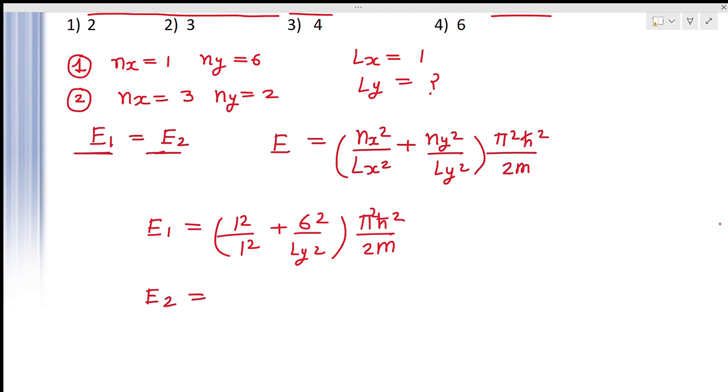And E2 will be NX value is 3. 3 square upon LX square means 1 square, plus NY is 2. 2 square upon LY square. Again, pi square h cross square upon 2m.